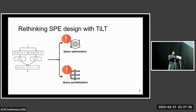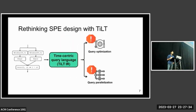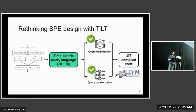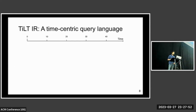Towards this end, we propose TILT. TILT proposes a novel time-centric query language called TILT IR to represent streaming queries, which we show can support much more effective query optimization and parallelization strategies. We subsequently built a compiler backend for TILT to automatically generate hardware-efficient code from the high-level TILT IR representations. Before going into details, let me give you a brief overview of what I mean by a time-centric query language.